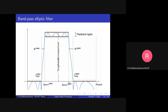The upper passband cutoff frequency is FP2 and the lower passband cutoff frequency is FP1. The lower stopband cutoff frequency is FS1 and the upper stopband cutoff frequency is FS2. Between FP1 and FP2, the gain is always above Delta_P — the minimum allowed gain. In the stopband, the gain is always less than or equal to Delta_S.